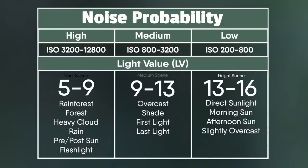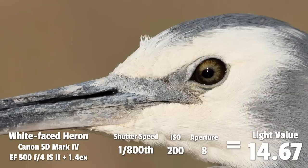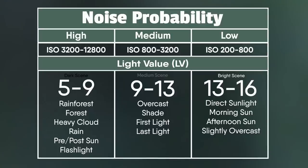On the right-hand side of the diagram, when you've got a bright scene and you're using ISOs as low as 200 to 800, noise really isn't an issue — this is when you've got direct sunlight and ample light to get your shutter speeds at a low ISO. Here's an image of a white-faced heron with a light value of 14.67, where I used an ISO as low as 200. As you can see from the 100% crop, there's literally very little noise.